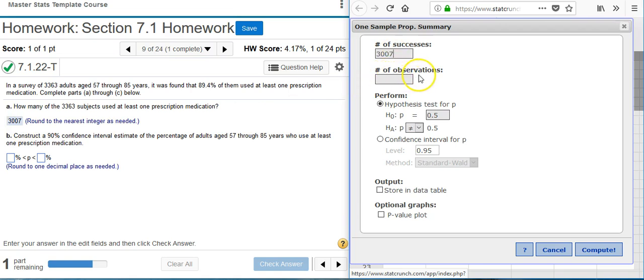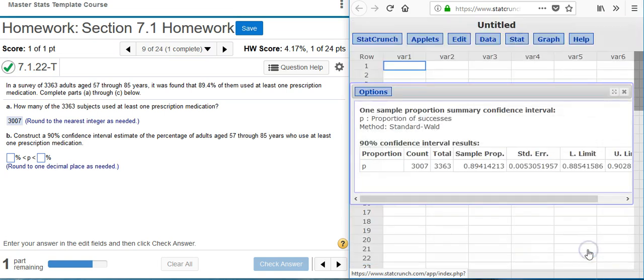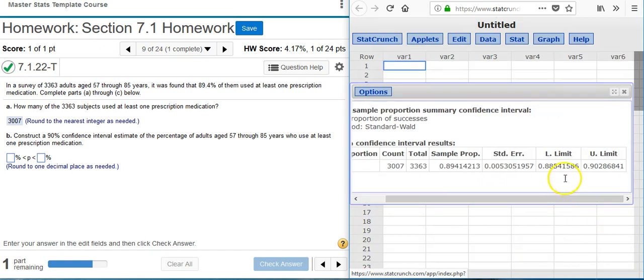Number of observations is the total number that's in the sample. That's this number here, 3,363. Then I click on the radio button for Confidence Interval and make sure that I have the right confidence level in the confidence level field. Once I have that put in, all the other defaults are fine, so I press Compute. And out comes my results window with these two numbers on the end, the upper and lower limits for my confidence intervals. Notice, however, that the answer fields have a percent after them.